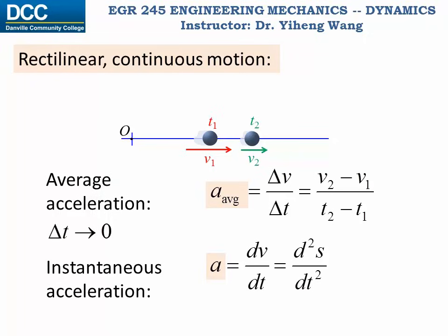When the acceleration vector is in the same direction as velocity, it is known as acceleration since the magnitude of velocity is increasing. Versus when the acceleration vector is in the opposite direction of velocity, it could be known as deceleration since the magnitude of velocity is decreasing.